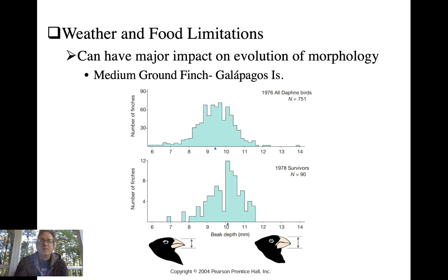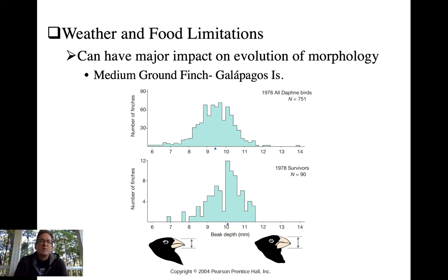Big-billed individuals had higher survivorship and some reproduction such that in the subsequent year, 1978, the average bill size instead of being 9.4 millimeters was over 10 millimeters in length. Not a huge difference, but consistent with what you'd expect given how this trait interacts with the ecological challenge put forth by limited food supply of certain seed categories.